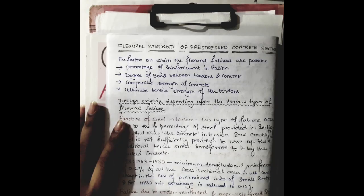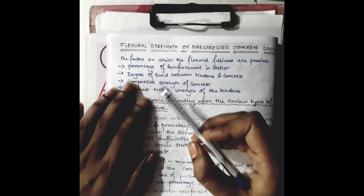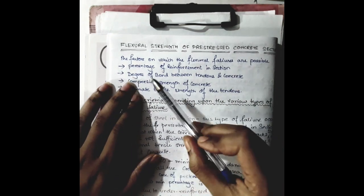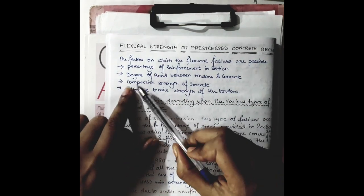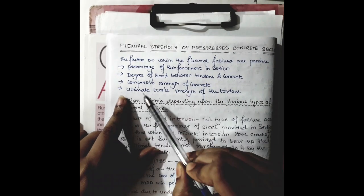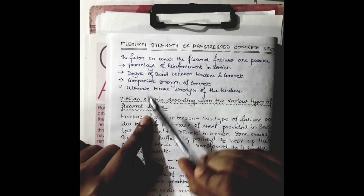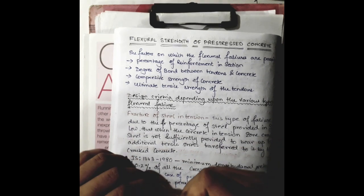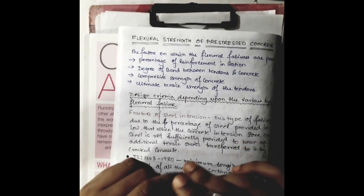The factors on which the flexural failures depend are: first, the percentage of reinforcement in section; next, the degree of bond between tendons and concrete; next, the compressive strength of concrete; and next, the ultimate tensile strength of tendons. These are the main factors on which flexural failures are dependent.